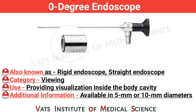Zero degree endoscope, also known as rigid endoscope or straight endoscope. Category: viewing. Use: providing visualization inside the body cavity. Additional information: available in 5 mm or 10 mm diameter.